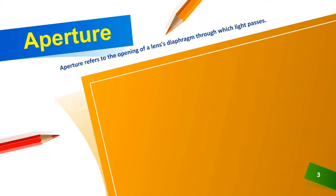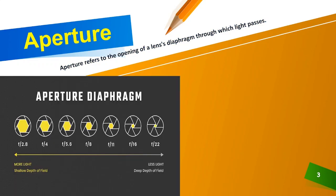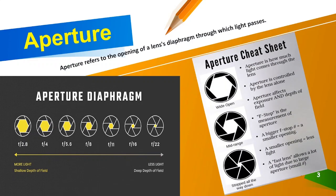Aperture also refers to the opening of a lens's diaphragm through which light passes. Aperture is how much light comes through the lens. Aperture is controlled by the lens alone, and it affects exposure and depth of field.